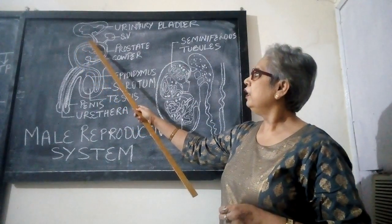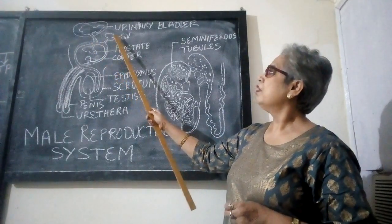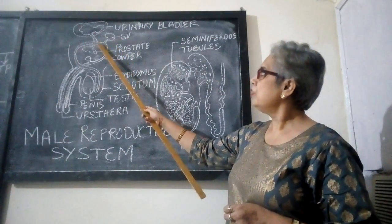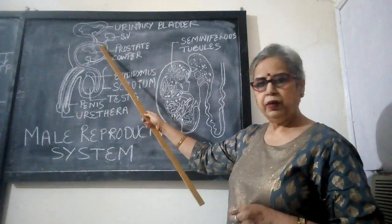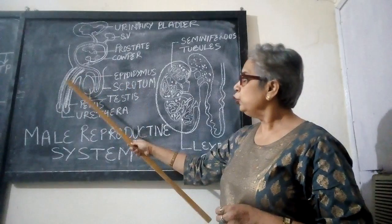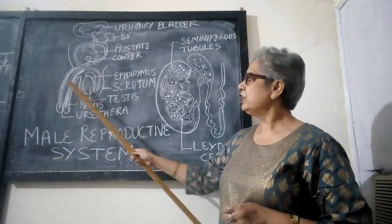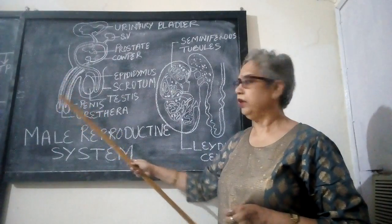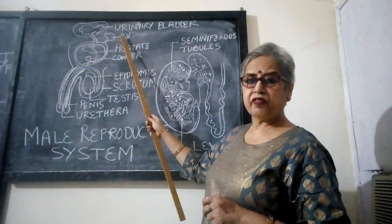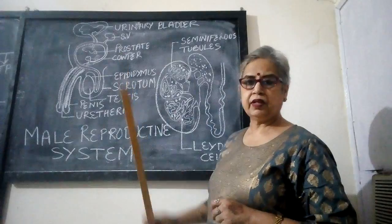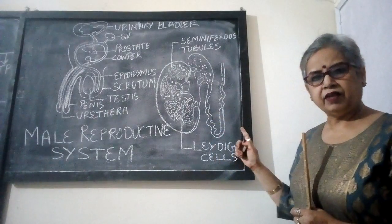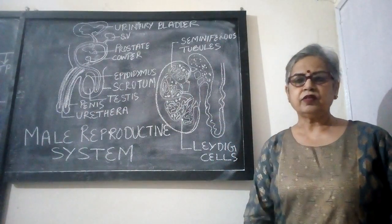While ascending, the vas deferens receives secretions from the seminal vesicles, prostate gland, and Cowper's gland. It also passes by the urinary bladder and then continues into the tube called the urethra. The urethra is covered by the muscular penis, which has a very rich supply of blood. The sperms mixed with the secretions of the seminal vesicles, prostate gland, and Cowper's gland form a mixture called semen — a milky white fluid.